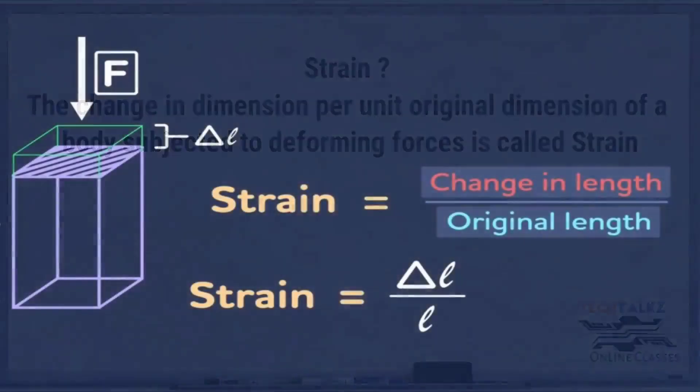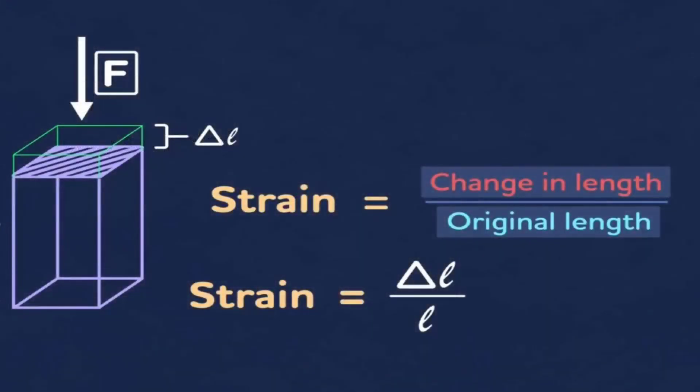Take an example. Consider F is the applied force and L be the original dimensions and delta L be the change in dimension. Then the strain will be change in length to the original length. That is delta L over L. Here the strain is calculated in terms of length.